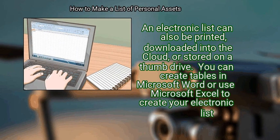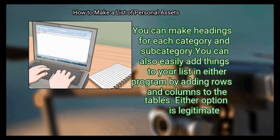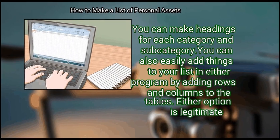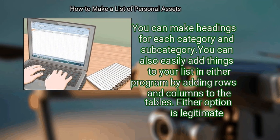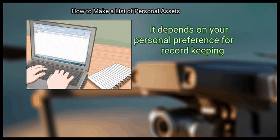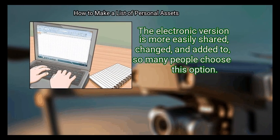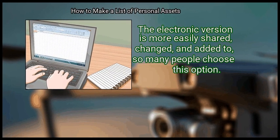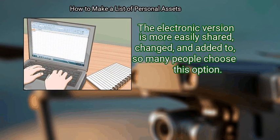You can create tables in Microsoft Word or use Microsoft Excel to create your electronic list. You can make headings for each category and subcategory, and easily add things to your list by adding rows and columns to the tables. Either option is legitimate — it depends on your personal preference for record keeping. The electronic version is more easily shared, changed, and added to, so many people choose this option.